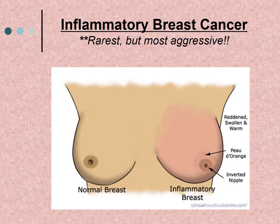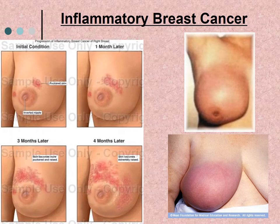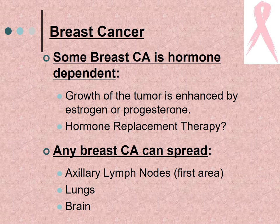Inflammatory breast cancer is the rarest but most aggressive form. The breast becomes reddened, swollen, and warm. The nipple becomes inverted, and there is a peau d'orange appearance to the skin. This image shows the progression: initial presentation, one month later, three months later, and four months later — demonstrating how quickly it spreads.